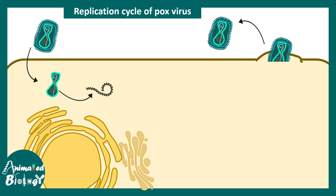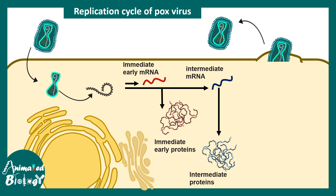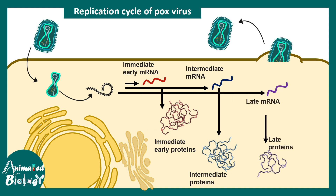The DNA in the cytoplasm sequentially makes immediate early mRNA, which gets translated into immediate early proteins. These proteins are further used to produce intermediate mRNAs and late mRNAs, which in turn form intermediate proteins and late proteins. Many of these sequentially generated products are also used to replicate the DNA genome and make more copies of it.